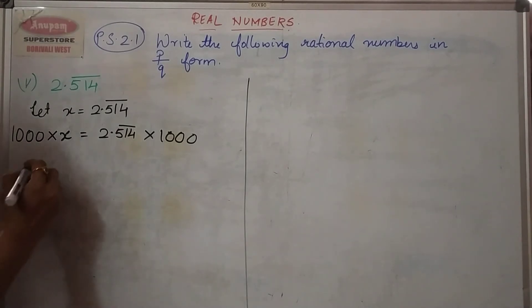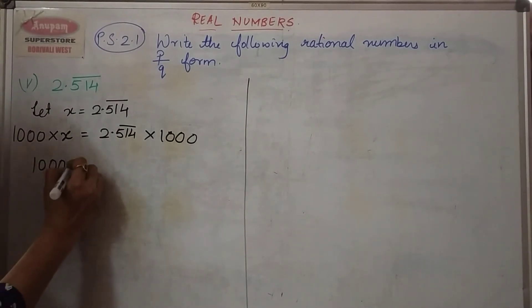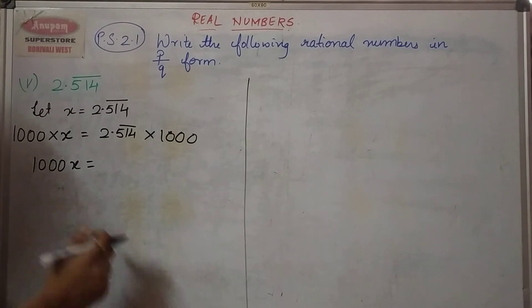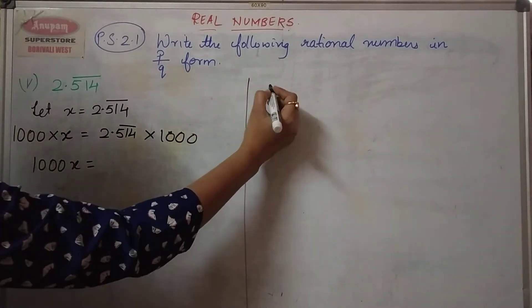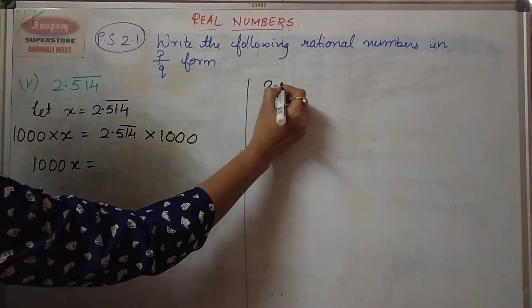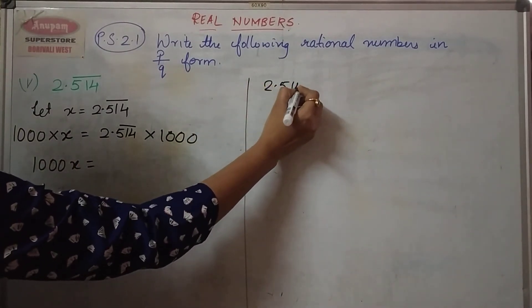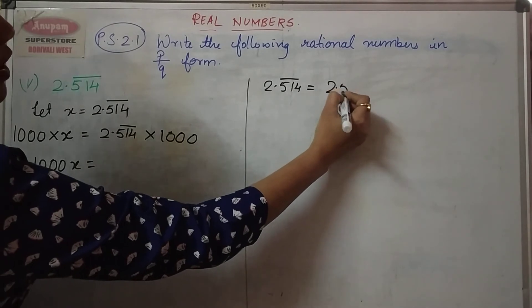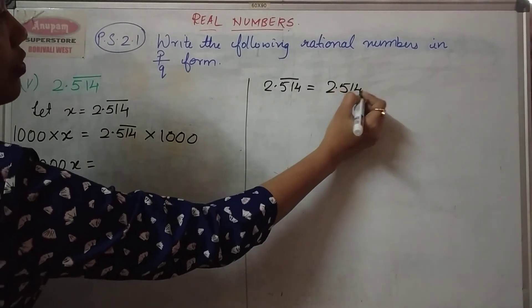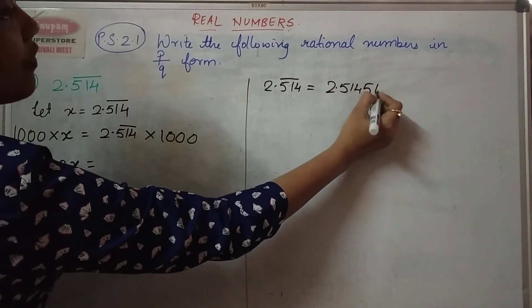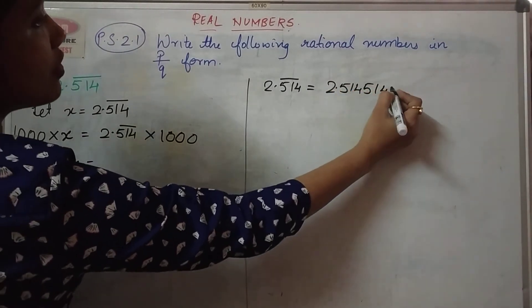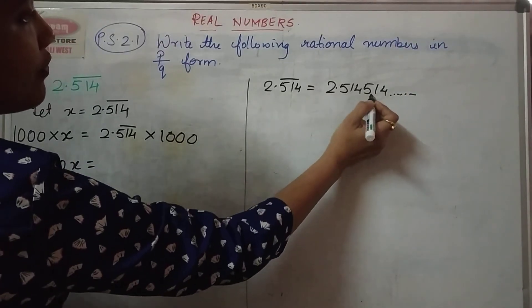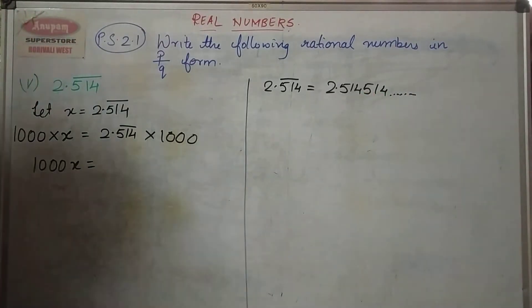When I multiply this I will get 1000x on the left. Now 2.514 bar means 2.514514 and so on, so 514 will be repeating.